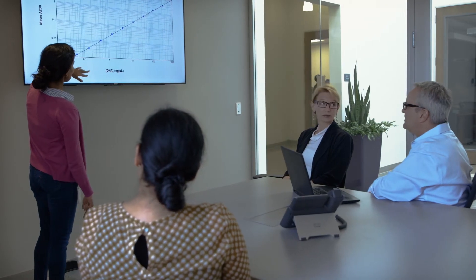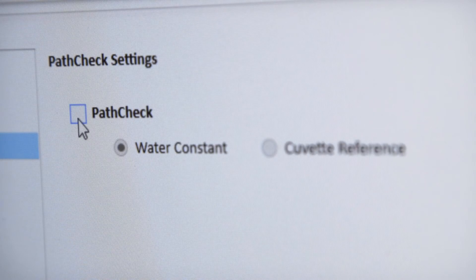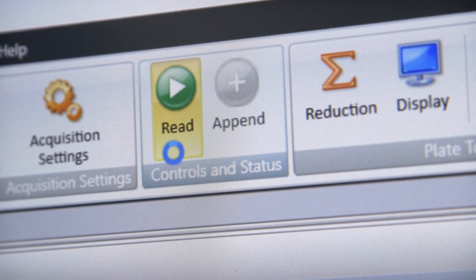We know reliability is a critical factor in research. That's why we equip the SpectraMax ABS Plus with PathCheck technology, the only temperature independent path length correction method.